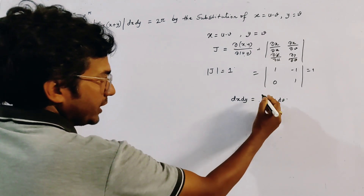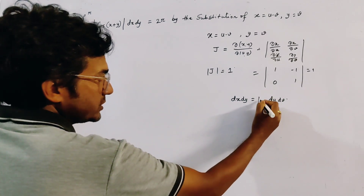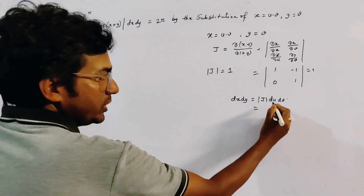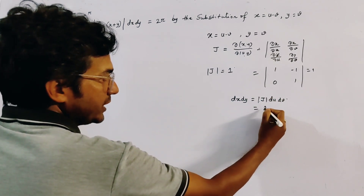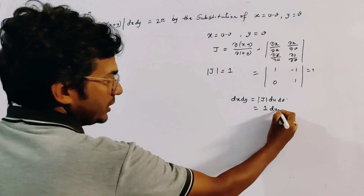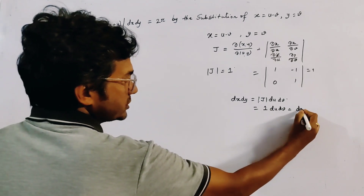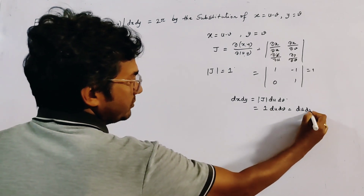Our formula is dx dy = |Jacobian| · du dv, that is du dv.